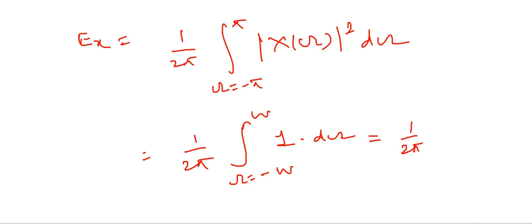Now we'll get 1/(2π) and integral of 1 is simply ω. And the limit is from -ω to +ω. And when we put this we will get ω minus (-ω) which is 2ω divided by 2π, which equals ω/π.